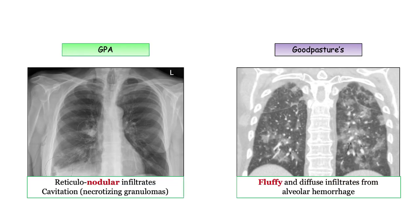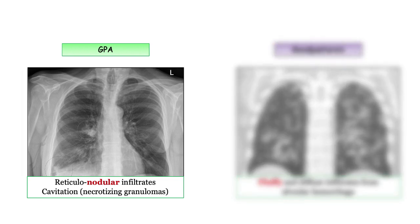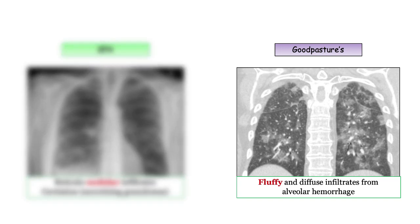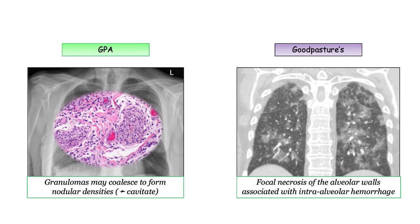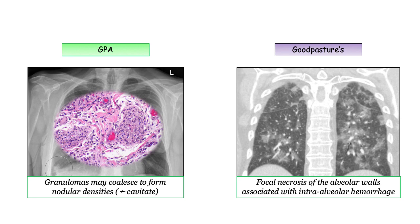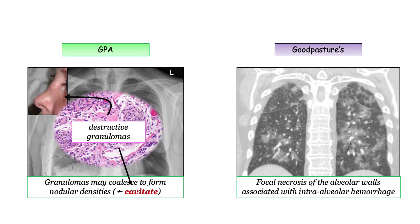Looking at the chest radiographs: the image on the left demonstrates the nodular appearance characteristic of GPA. The image on the right is a coronal CT section from a patient with pulmonary hemorrhage — note the fluffy and diffuse appearance of the infiltrates. For GPA, or granulomatosis with polyangiitis, the coalescence of granulomas generates that reticulonodular appearance. These necrotizing granulomas account for the tendency to form the cavitary lesions associated with GPA and explain the upper respiratory tract involvement not seen in Goodpasture's.